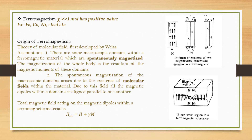Weiss made some assumptions. Firstly, in a ferromagnetic material there are some macroscopic domains which are spontaneously magnetized. So even in the absence of a magnetic field, the domains are still magnetized. The magnetization of the whole material is due to the resultant of the magnetic moments of these microscopic domains. Secondly, a molecular field exists within the material, and this spontaneous magnetization is due to the existence of these molecular fields.